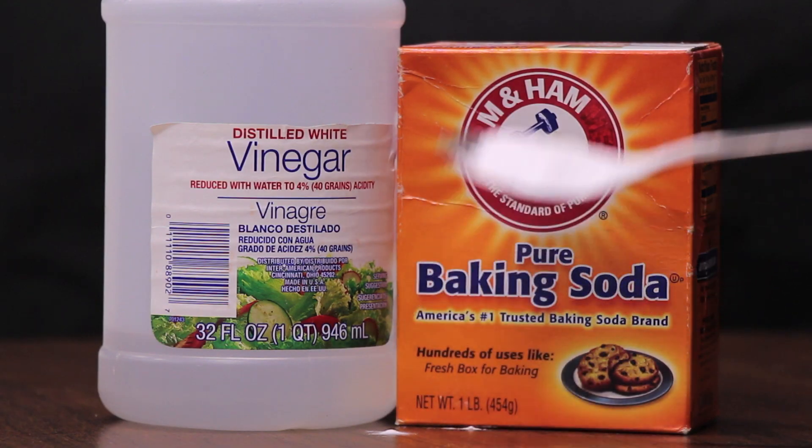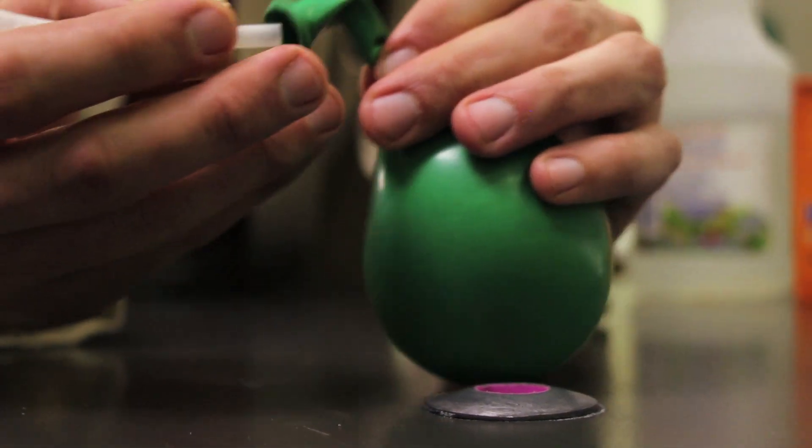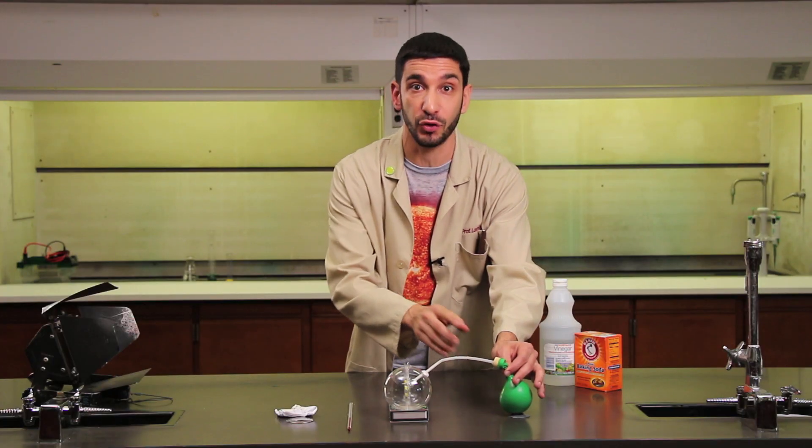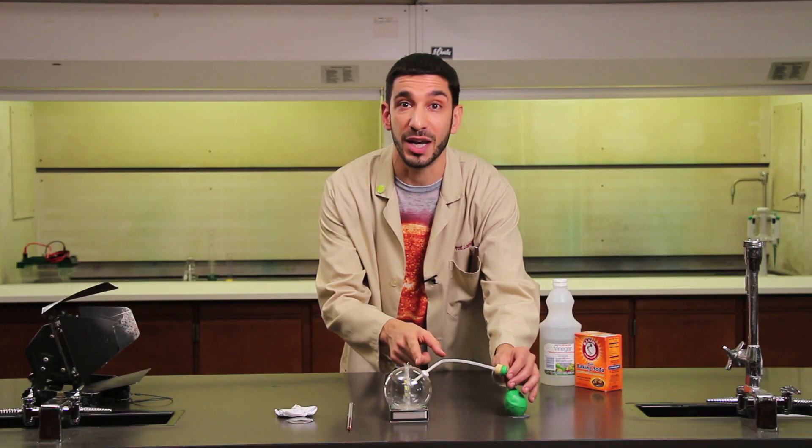By mixing baking soda and vinegar, I now have some CO2 trapped in this balloon. While holding the balloon neck tight, we quickly cork it. We want to make sure that both clay seals are good before releasing the CO2 into the chamber.